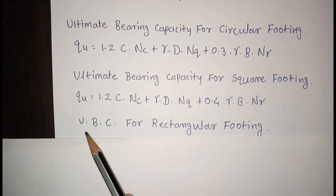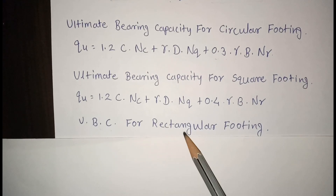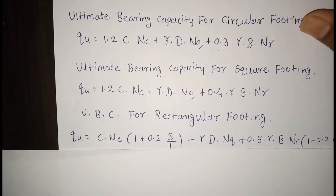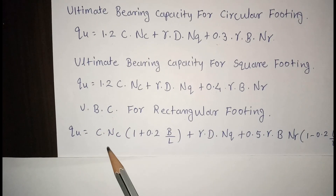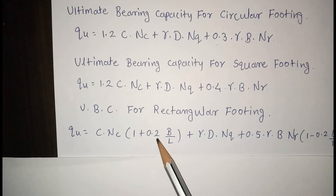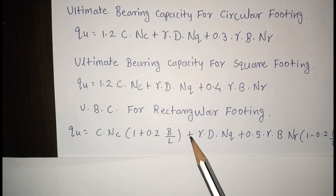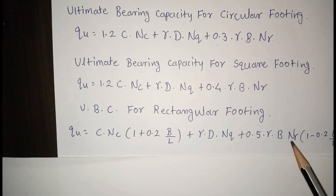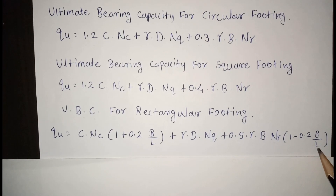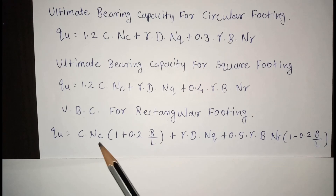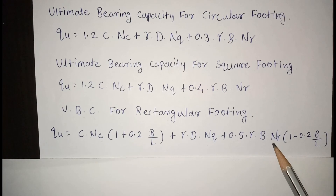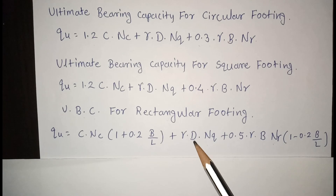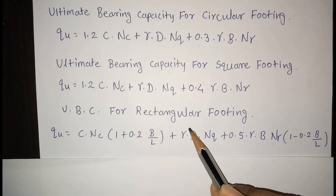For rectangular footing, ultimate bearing capacity: QU = CNC(1 + 0.2B/L) + γD·NQ + 0.5γB·Nγ(1 − 0.2B/L), where L is the length of the footing, B is the width of the footing, NC, NQ, and Nγ are bearing capacity factors, D is the depth, and γ is the unit weight of the soil.